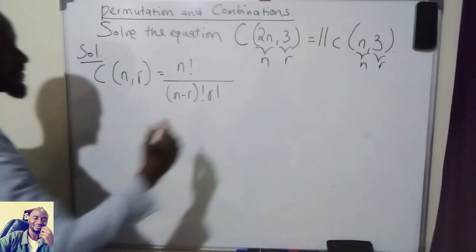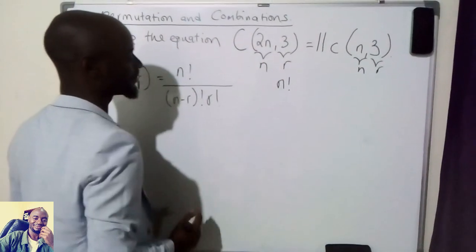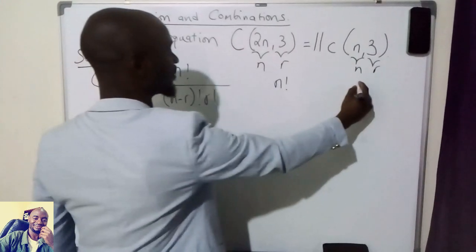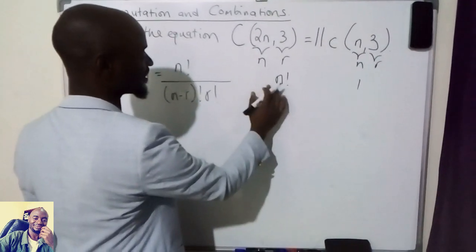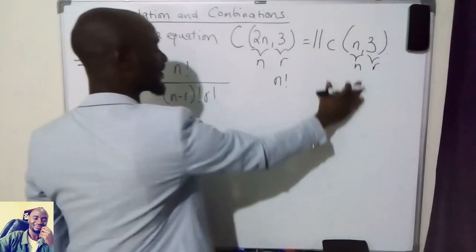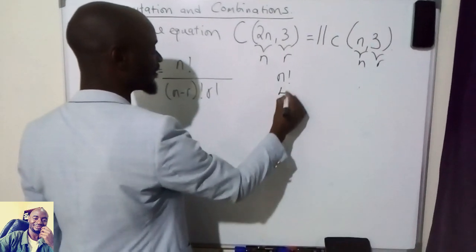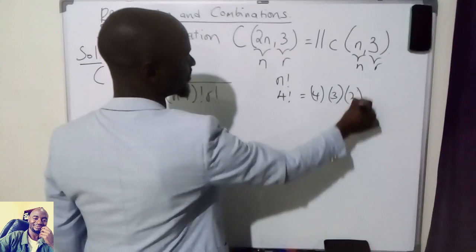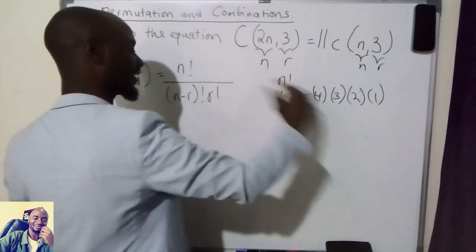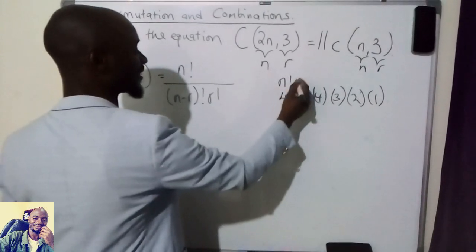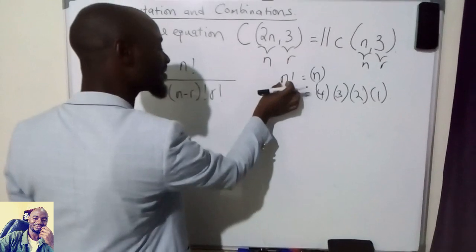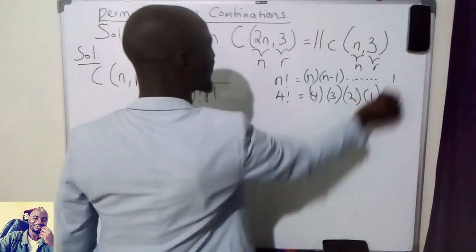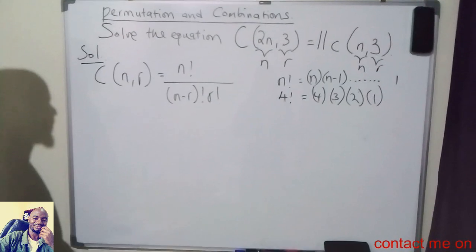Now, when we say factorial — for instance, if I say n factorial — this is the multiplication of numbers from n in descending order up to 1. It's the multiplication of the first natural numbers up to n. So if I have, for instance, 4 factorial, this would be equal to 4 multiplied by 3 multiplied by 2 multiplied by 1, in descending order. So if we say n factorial, this is equal to n multiplied by n minus 1, and so on, until we have 1. So that is the definition of the factorial notation.